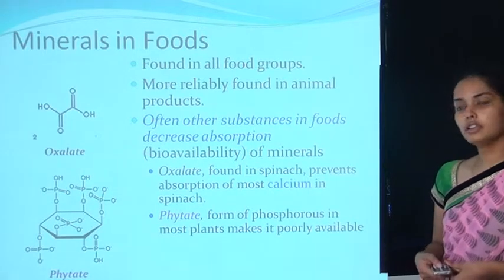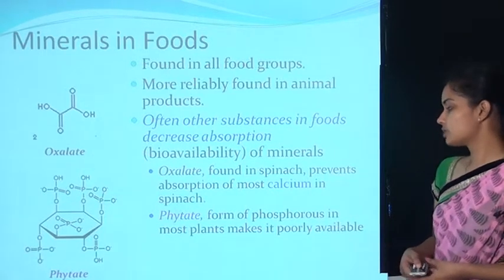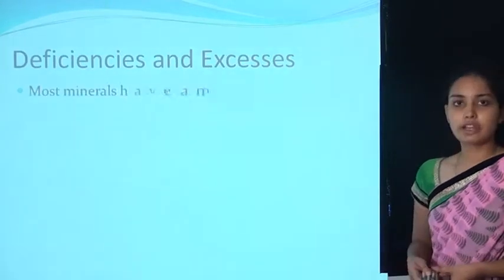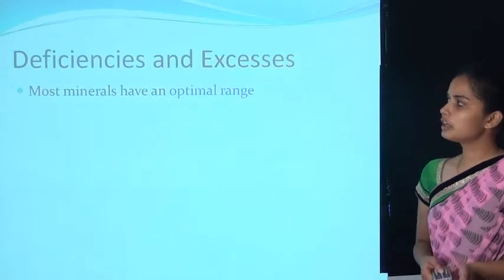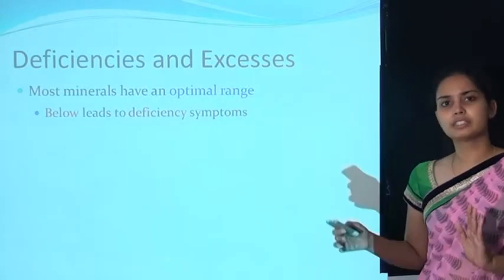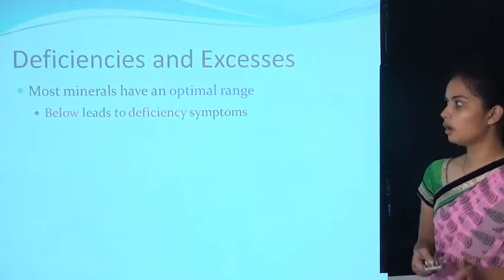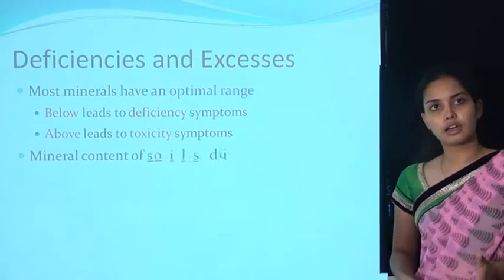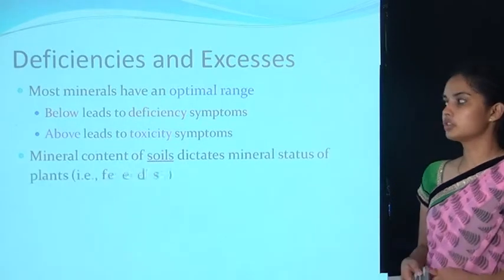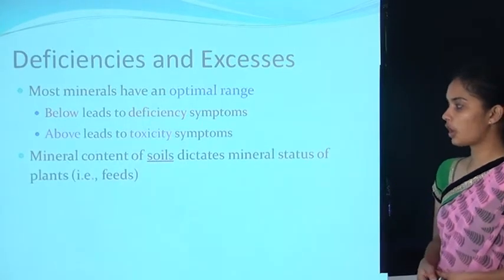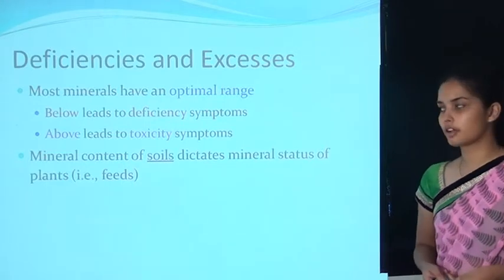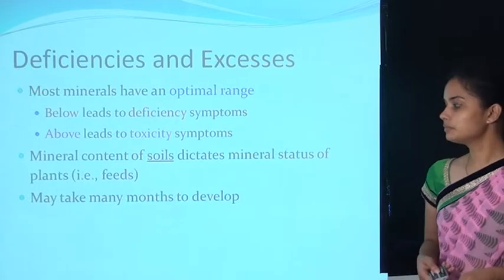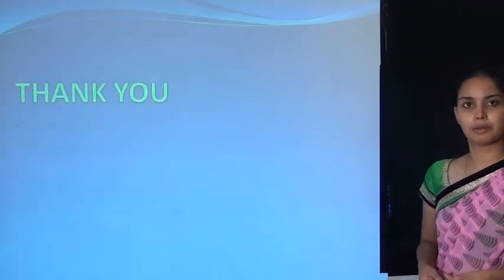Certain substances in food can decrease the bioavailability of minerals. For example, oxalate found in spinach prevents the absorption of most calcium, and phytate, which forms the phosphorus in most plants, makes it poorly available. Most minerals have an optimum range — below the required amount leads to deficiency, and above the level leads to toxicity. The mineral content of the soil also dictates the mineral status of plants used as feed.